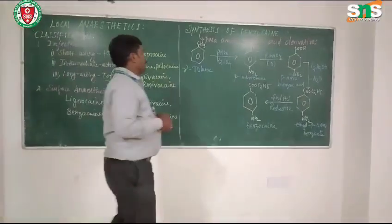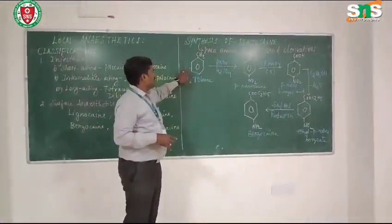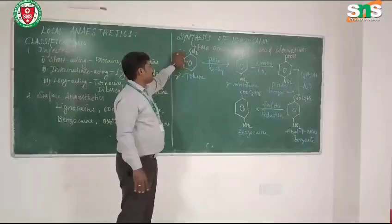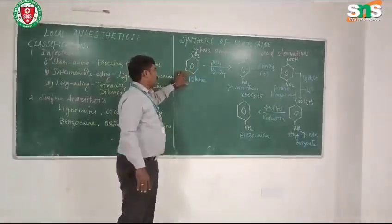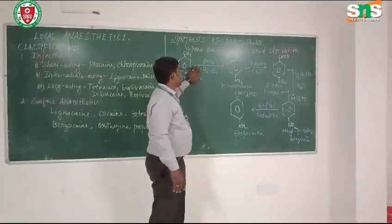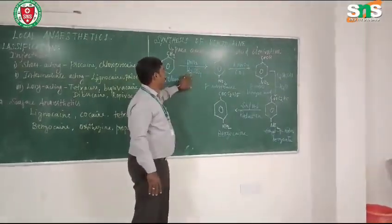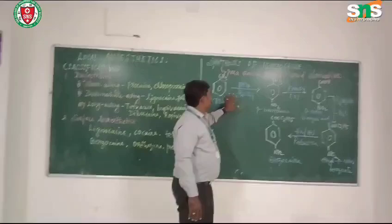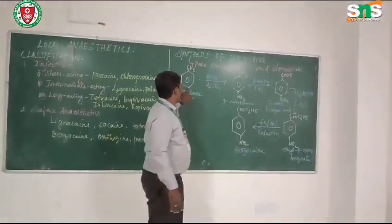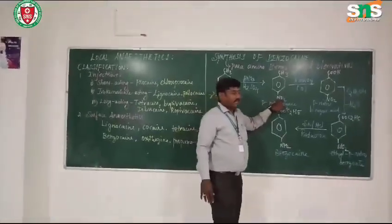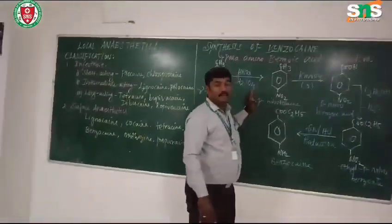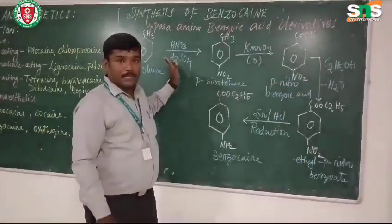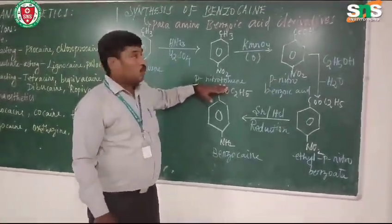Let us see the synthesis of benzocaine. The starting material for the synthesis of benzocaine is toluene — formula C6H5CH3. The first step is nitration. This nitration is carried out in the presence of sulfuric acid, that is concentrated nitric acid HNO3 in presence of H2SO4. The NO2 group will be attached at the para position, giving para-nitrotoluene.